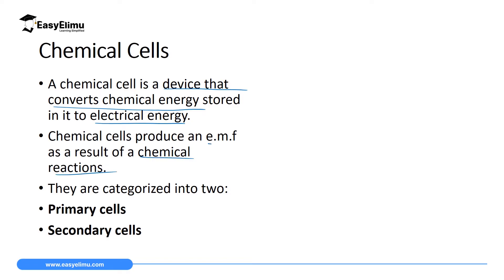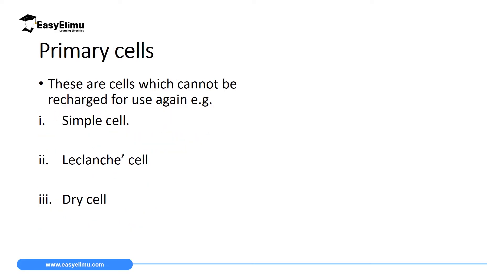We have two categories of chemical cells. The first one is primary cells and the second one is secondary cells. We will begin with primary cells, where we will discuss the simple cell, then the Leclanché cell and the dry cell as primary cells. Later we will discuss lead-acid accumulators and alkaline accumulators as secondary cells.